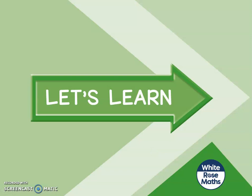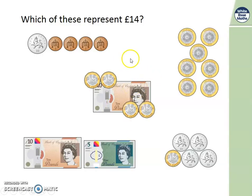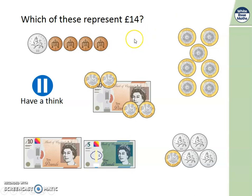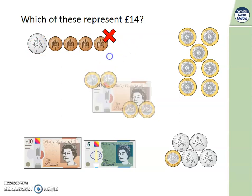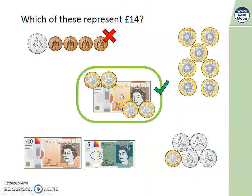Let's put that into our learning today. Which of these represents 14 pounds? Pause the video here and have a think. On the first one here, we've got 10 pence, add 4 pennies — no, that's 14 pence, not 14 pounds. In this section we've got a 10 pound note and 4 one-pound coins. That makes 14 pounds.